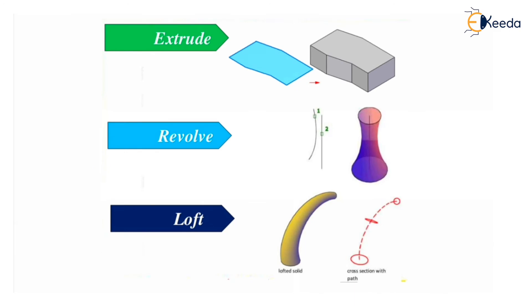Let's see which operations are there. One is extrusion along a particular path. Another is revolve along a particular axis, where we can revolve any type of geometry.